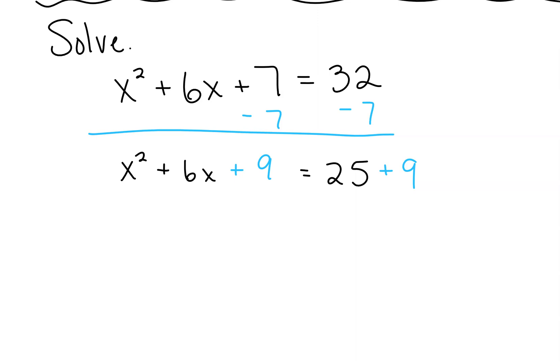And once we have that perfect trinomial, then we can factor. We made it a perfect trinomial so that it would factor into something squared, and that something would be x plus 3 squared equals 34. Does this look familiar, this step right here? This should look just like what we did for homework last night. Once we get to this something squared, we can take the square root of both sides.